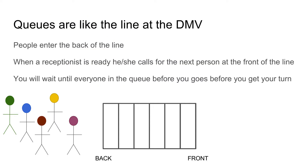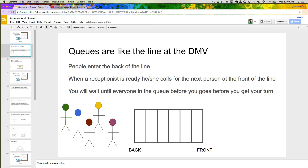To get started, we're just going to cover what a queue is. I'm going to use real-world examples, because I feel like they're a lot easier to understand if you just think of them like the real-world representation of what they're meant to cover. A queue is like a line at the DMV or a line at the grocery store, or really any sort of line where people enter the back of the line and move towards the front.